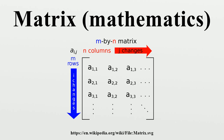For instance, this is a real matrix. The numbers, symbols, or expressions in the matrix are called its entries or its elements. The horizontal and vertical lines of entries in a matrix are called rows and columns, respectively.